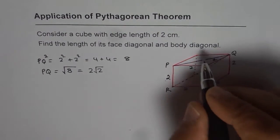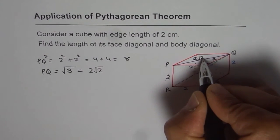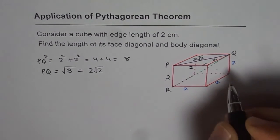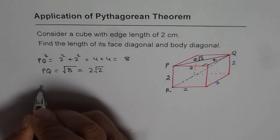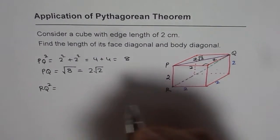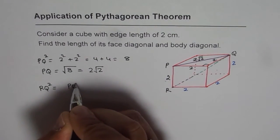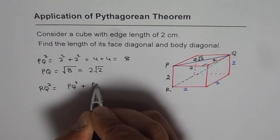So we have to find, and now we found PQ is 2 square root 2. So what is RQ? So RQ square should be equal to PQ square plus PR square.